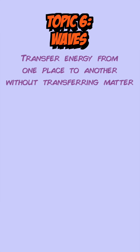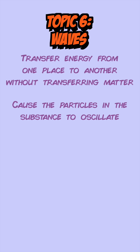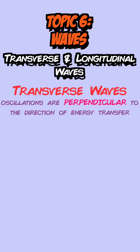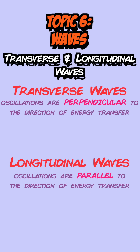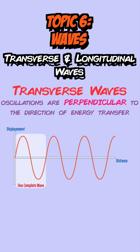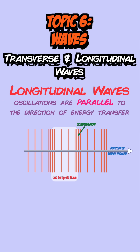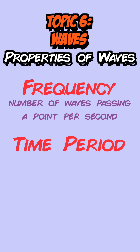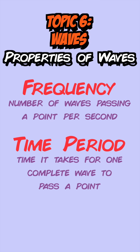Topic 6 covers waves, which transfer energy from one place to another without transferring matter by causing particles to oscillate. There are two types: transverse waves, where oscillations are perpendicular to the direction of energy transfer, and longitudinal waves, where they are parallel. Transverse waves include water waves and electromagnetic waves; longitudinal waves include sound. Key properties are amplitude, wavelength, frequency (waves per second), and time period. Two equations link these definitions. Longitudinal waves also have compressions and rarefactions.